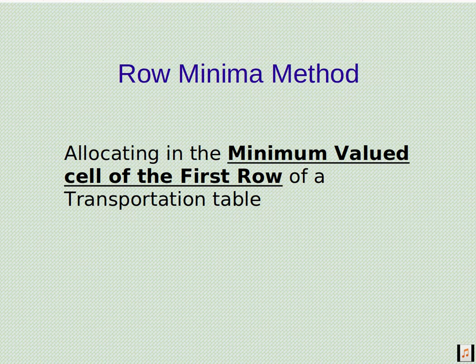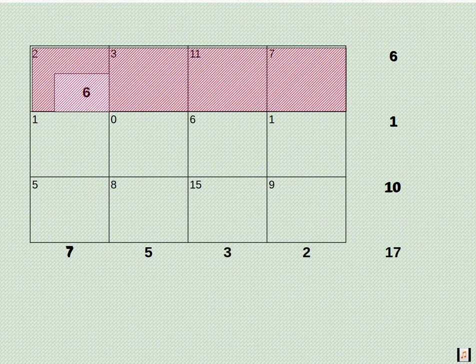Taking our balance problem, here in the first row 2 is the minimum, so we allocate here. If we compare the row and column values, that is supply and demand values, 6 is the minimum, so we allocated 6 and the row value is fully satisfied, so we eliminated that row and for column we will have 1 unit remaining.